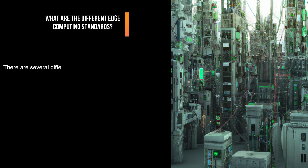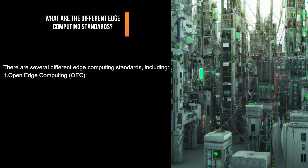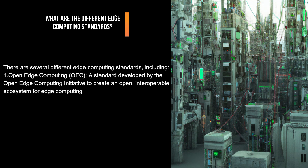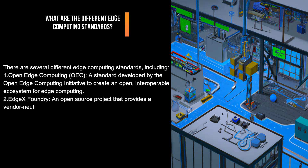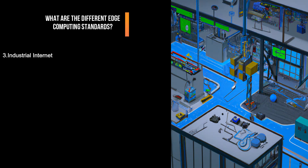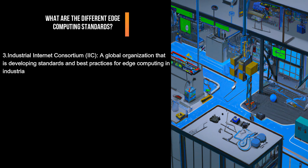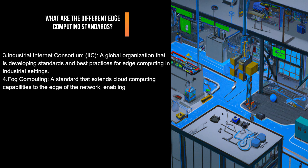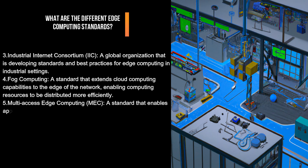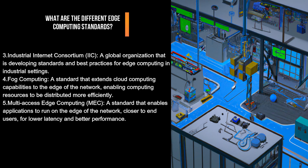What are the different edge computing standards? There are several edge computing standards, including: Open Edge Computing (OEC), developed by the Open Edge Computing Initiative to create an open, interoperable ecosystem; EdgeX Foundry, an open-source project providing a vendor-neutral framework for building edge computing solutions; the Industrial Internet Consortium (IIC), a global organization developing standards and best practices for edge computing in industrial settings; fog computing, which extends cloud computing capabilities to the edge of the network for more efficient distribution of computing resources; and multi-access edge computing (MEC), a standard enabling applications to run on the edge of the network closer to end users for lower latency and better performance.